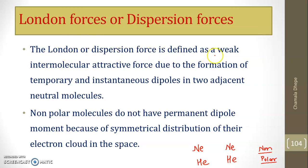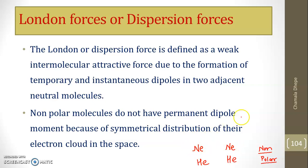London or dispersion force is defined as a weak intermolecular attractive force due to the formation of a temporary and instantaneous dipole in two adjacent neutral molecules. Non-polar molecules do not have a permanent dipole moment because of symmetrical distribution of electrons. For example, neon has electronic configuration 2,8 — two electrons in the K shell and eight in the L shell, symmetrically arranged.